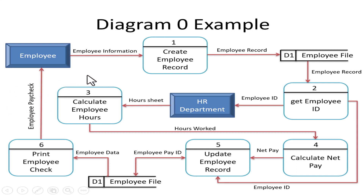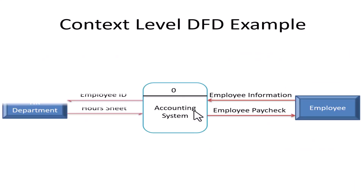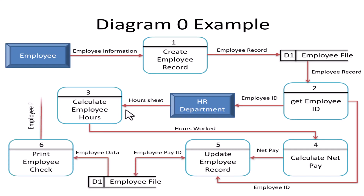Balancing means that what goes in and out of each external entity in the level zero diagram must match exactly what goes in and out in the context diagram. For example, the HR department receives 'employee ID' and provides 'hours sheet' in both diagrams — they are the same, so it is balanced.